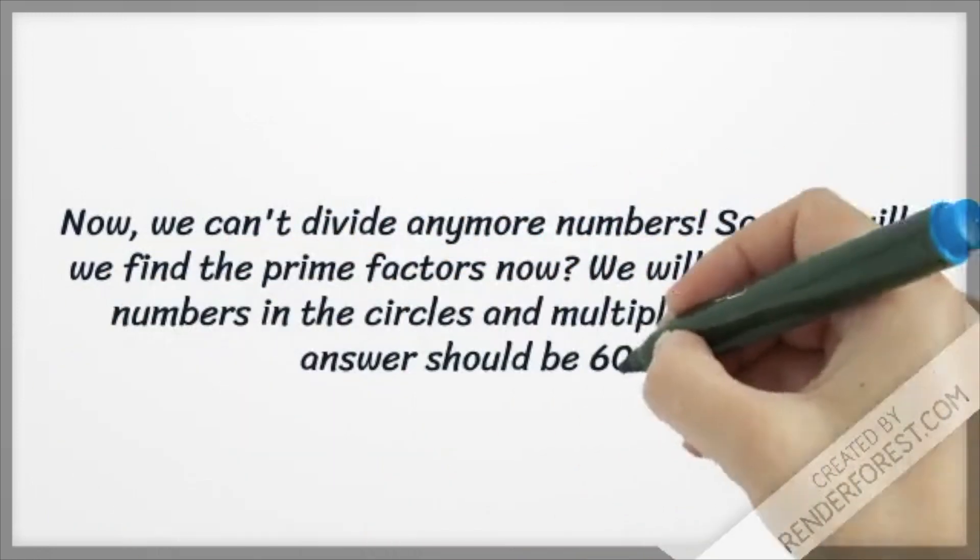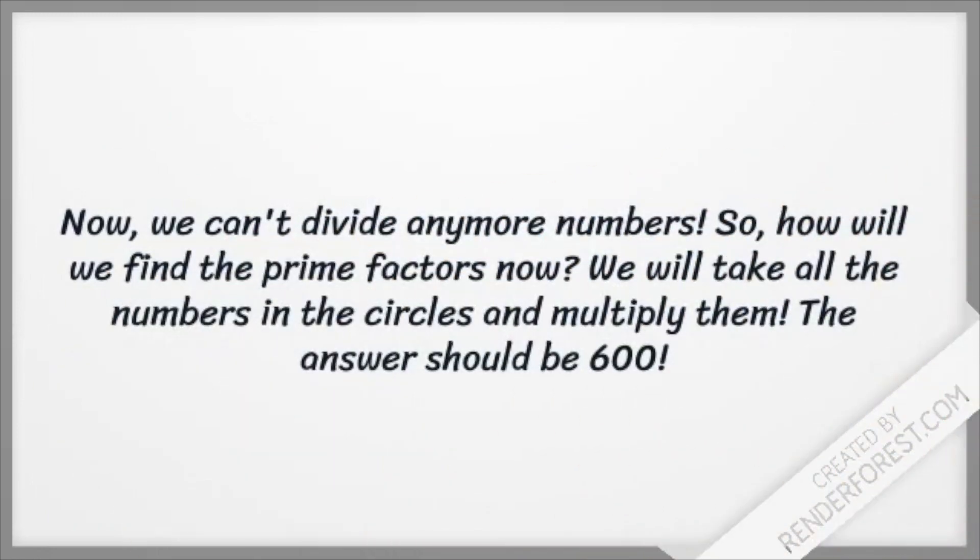Now, we can't divide anymore numbers. So, how will we find the prime factors now? We will take all the numbers in the circles and multiply them. The answer should be 600.